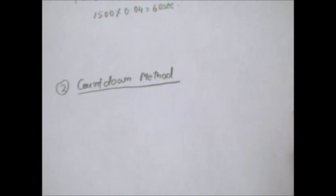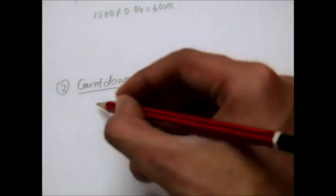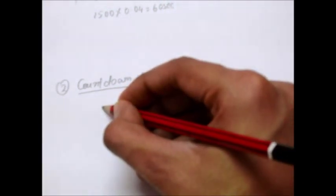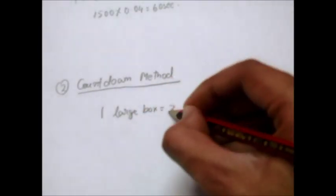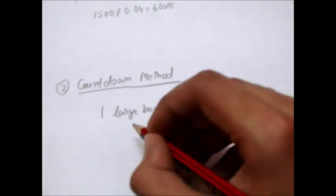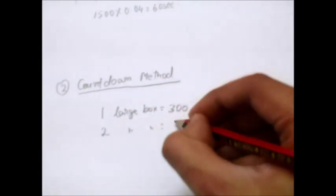We need to count the number of large boxes between two consecutive R-R intervals. For example, if between two R-R intervals there is only one large box, then the heart rate will be 300. If two large boxes, then 150.